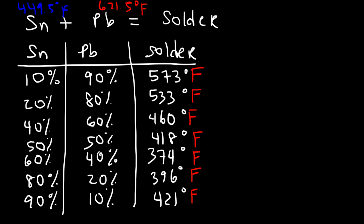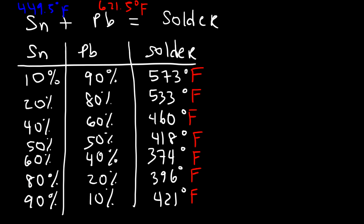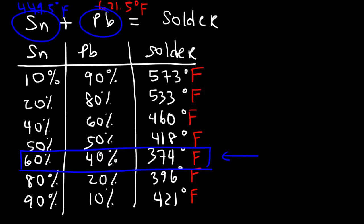Notice that when we have an alloy that is predominantly lead, the melting point is very close to the actual melting point of pure lead — 573 compared to 621. And when we have a mixture that's predominantly tin, the melting point is close to that of tin. However, notice that at some points — particularly the 60-40 ratio — the melting point of the solder is actually less than the individual melting points of tin and lead. So sometimes in the middle you can get a melting point lower than either of the two metals. But whenever you have an alloy that is predominantly one metal, the melting point will be close to that of the predominant metal.